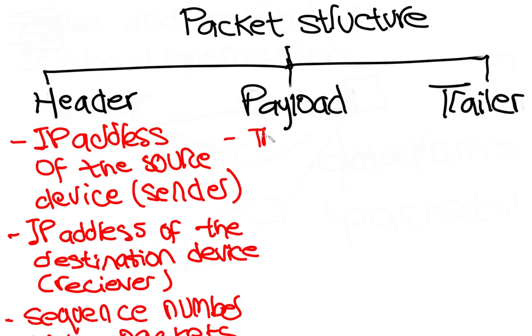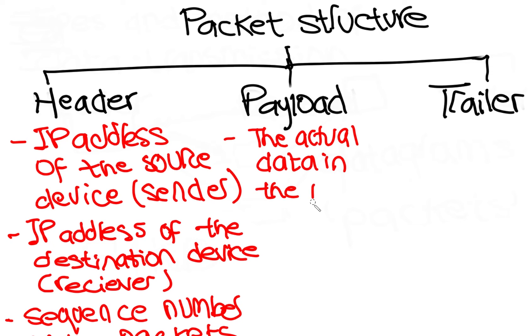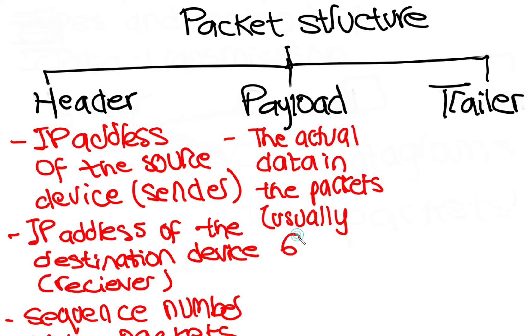For each packet, the payload consists of the actual data being sent in the packet. This is usually about 64 kilobytes.